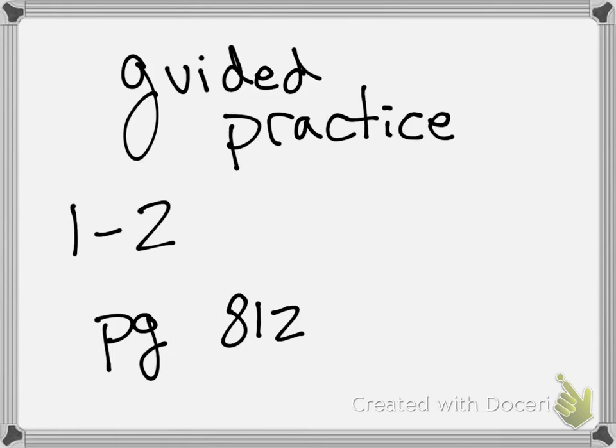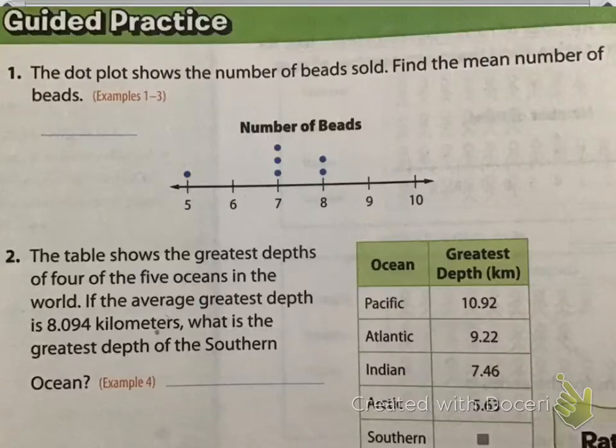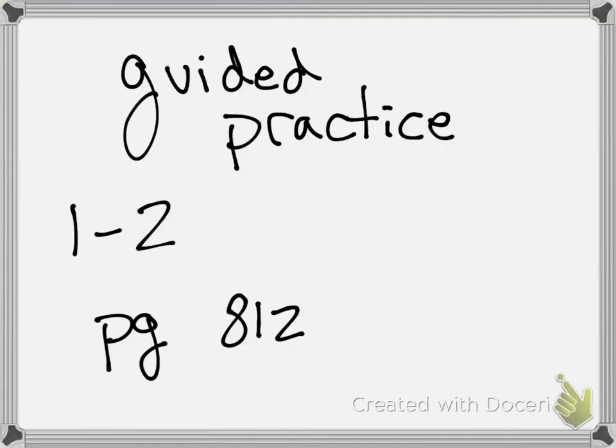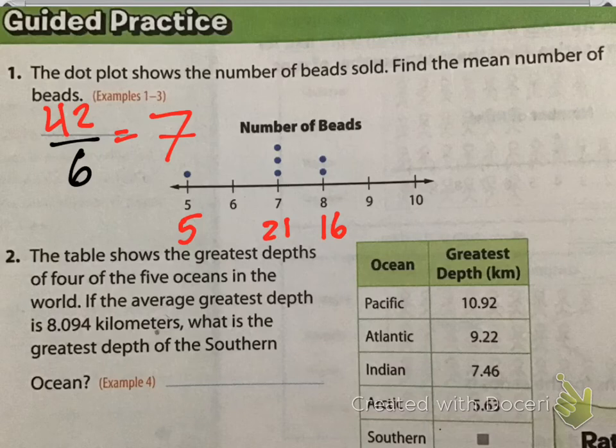So, we're going to do the guided practice together, numbers 1 and 2, on page 812. The dot plot shows the number of beads sold. Find the mean number of beads. Once again, I always like to start with my denominator. I see here there are 6 plot points. Let's add them all up. 5, then 7 times 3 is 21, then 8 times 2 is 16. So, if I added all of those together, 5 plus 21 plus 16, I get 42. And so, the mean number of beads sold was 7. We see this. But you can't always just rely on that. You can't just eyeball it. We have to do it this certain way. It's important.